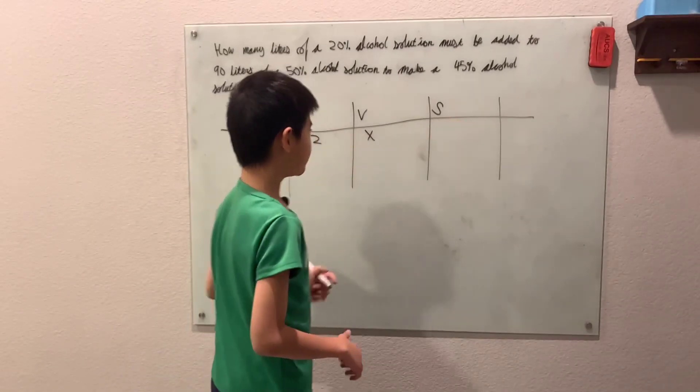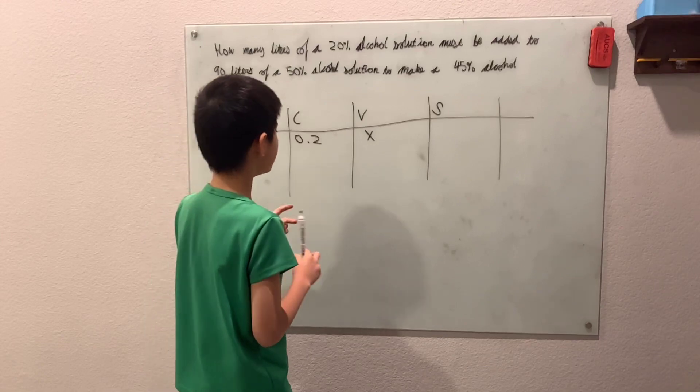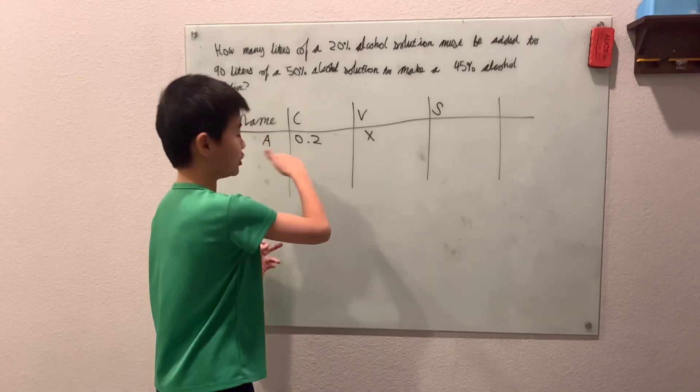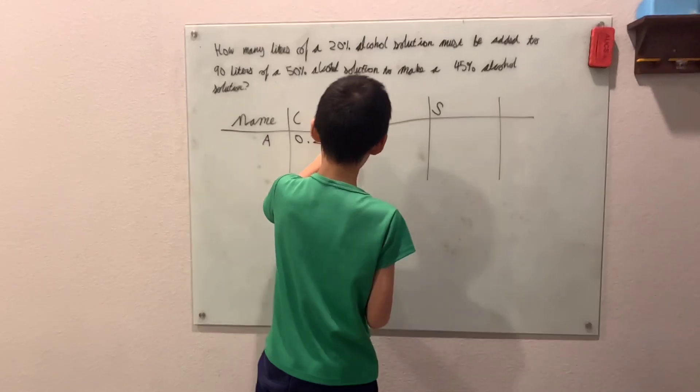And the substance, well that would just be 0.2 times X, right? 0.2 of X.